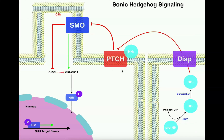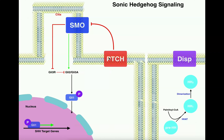Before we really get into the signaling pathway for hedgehog, we need to understand what's going on when there's no hedgehog present. There's a protein called patched, and patched's normal function is to inhibit this protein called smoothened. When smoothened becomes inhibited by patched, smoothened cannot exert its function. If smoothened were to become activated, its functions involve inhibiting this protein called GLI-3 repressor and activating GLI-2 and GLI-3A.